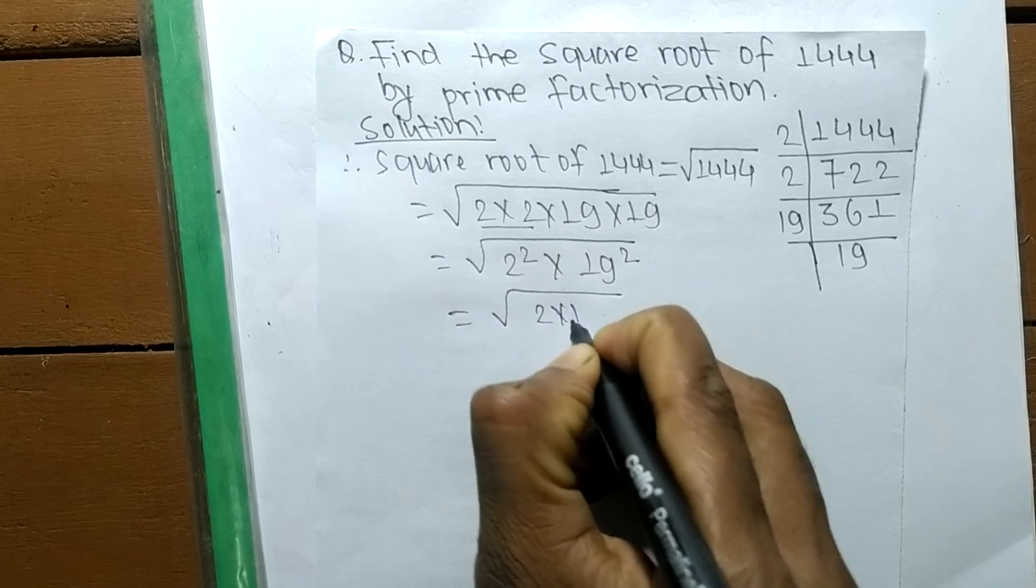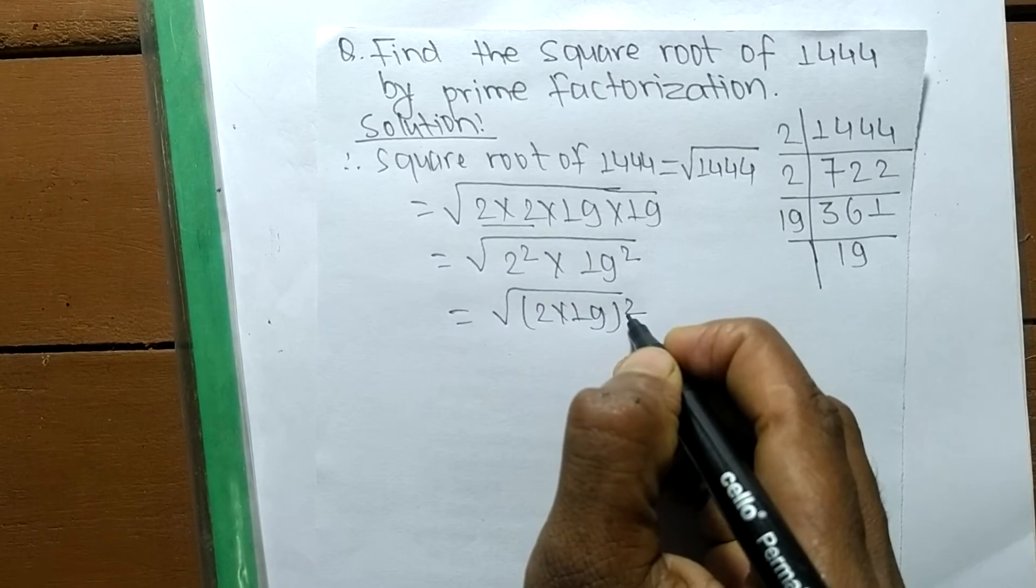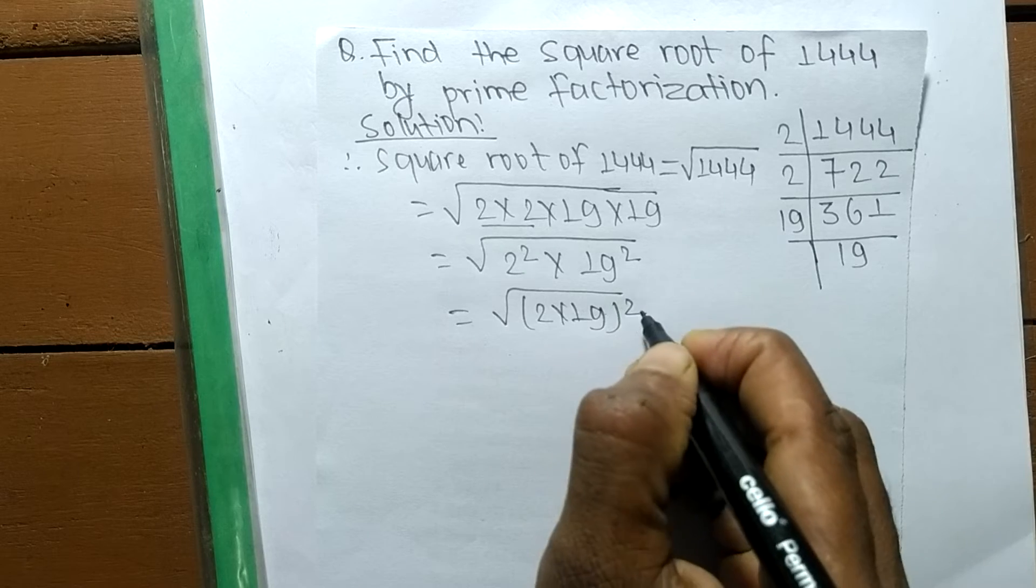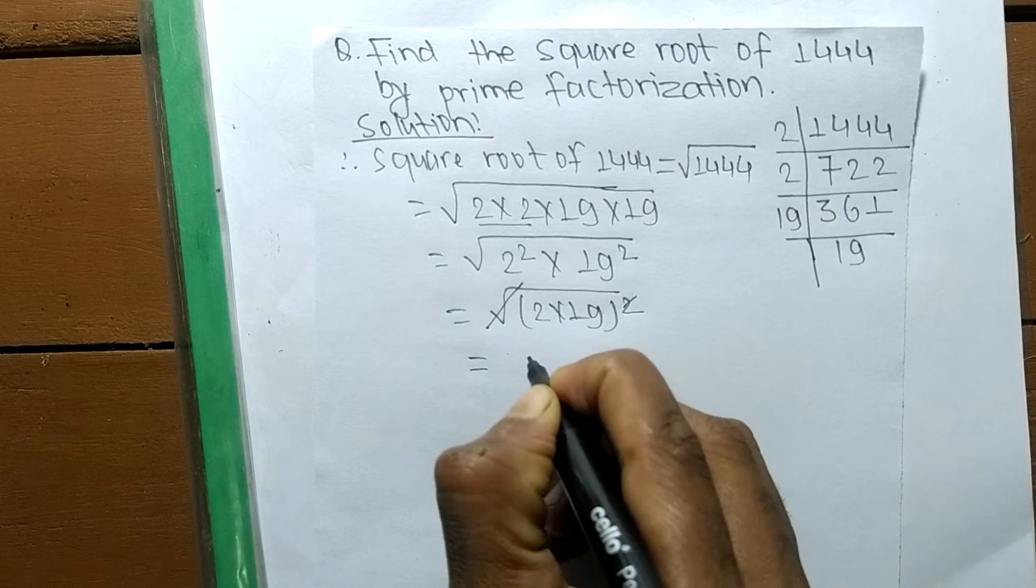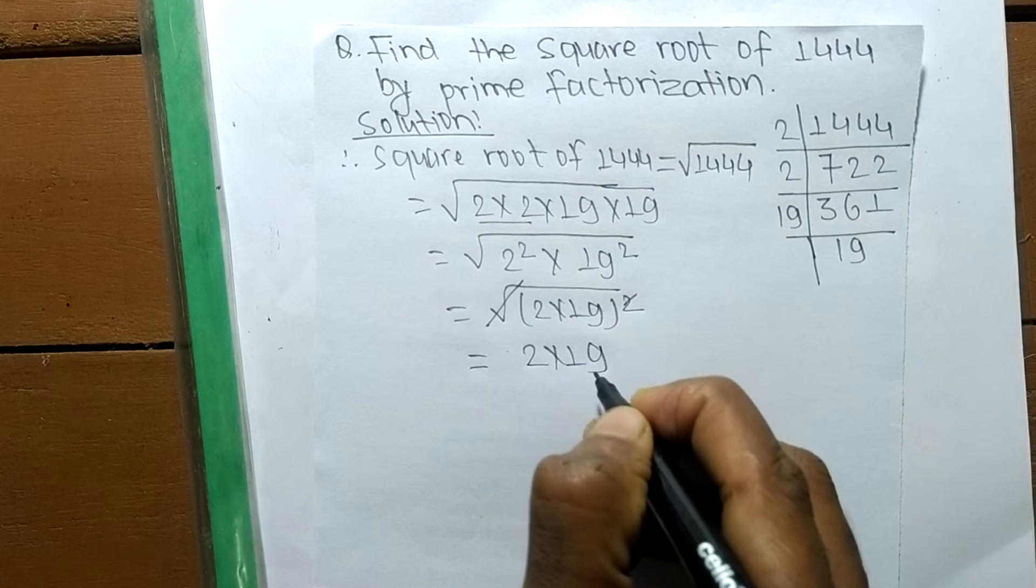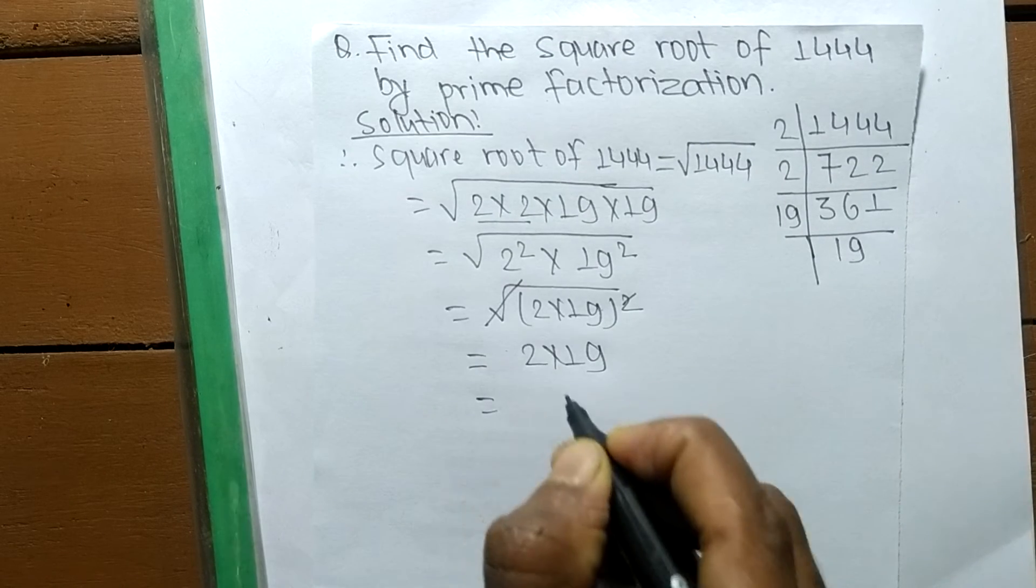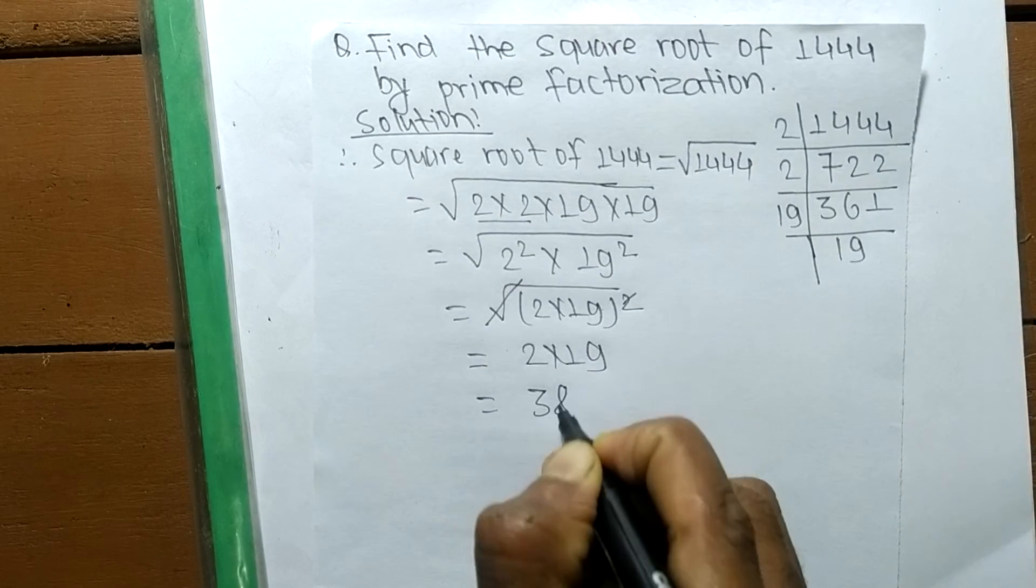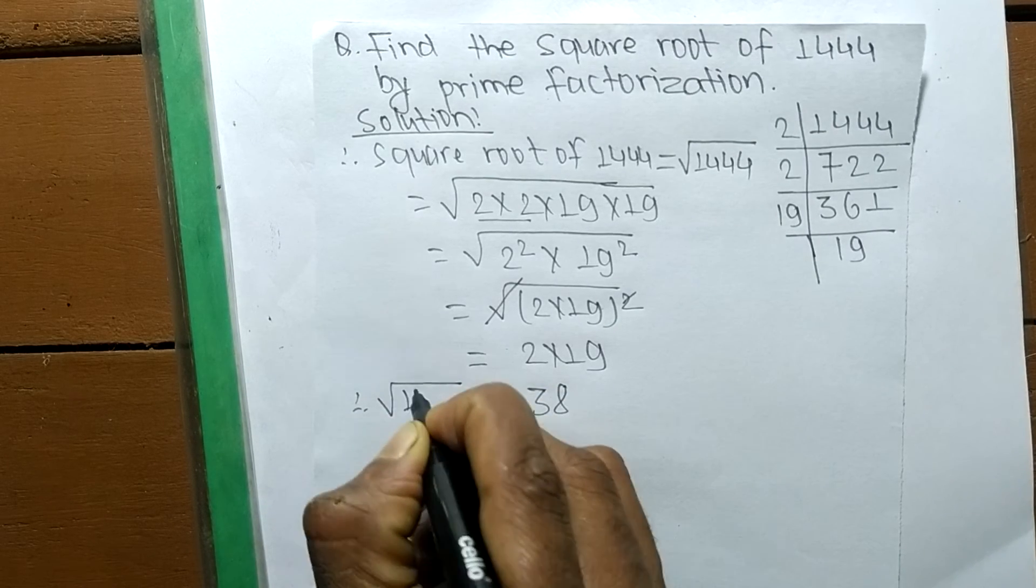So we have written here a square as a common, so a square and a square root cancel each other. So it is 2 into 19 means 2 into 19 comes out of the square root. So 2 times 19 means it is 38. So the square root of 1444 is 38.